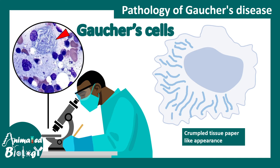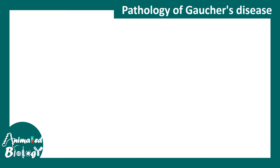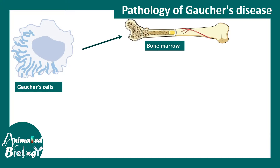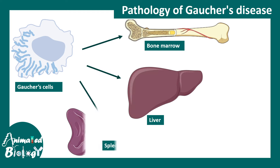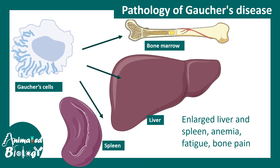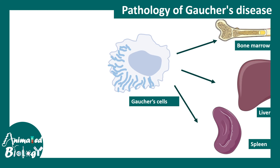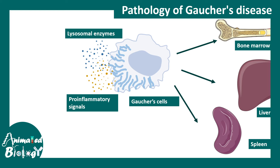These Gaucher's cells, which look like folded tissue paper, accumulate in bone marrow, liver, and spleen, causing enlargement and other problems. Gaucher's cells are non-functional and can secrete cytokines that evoke inflammation. Lysosomal enzymes can also leak out, making inflammation even worse. There could also be tissue scarring.